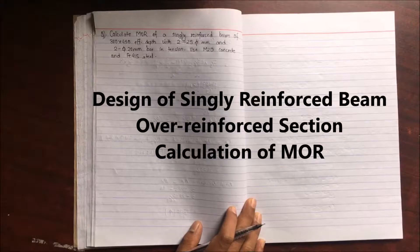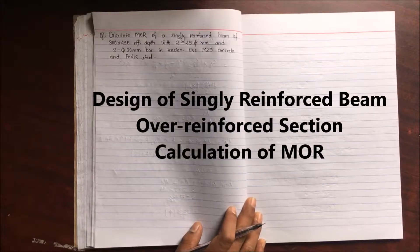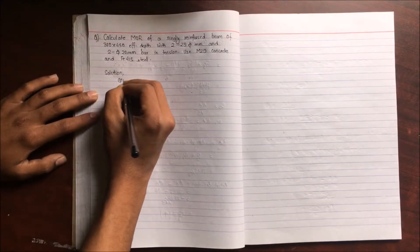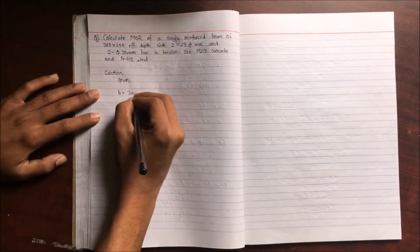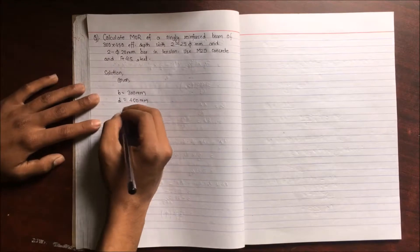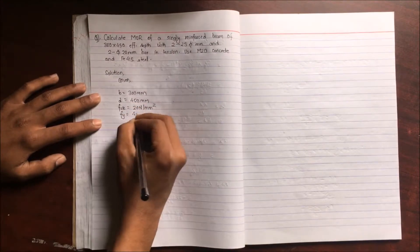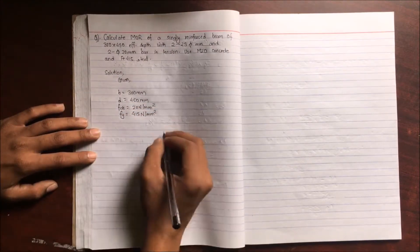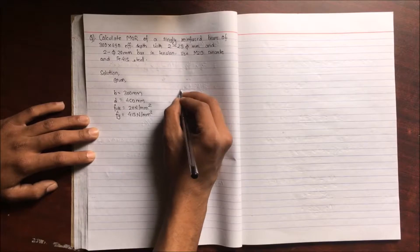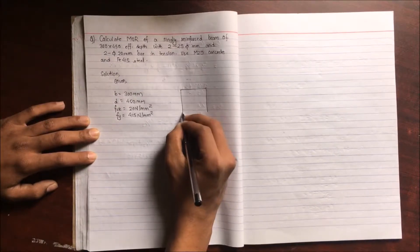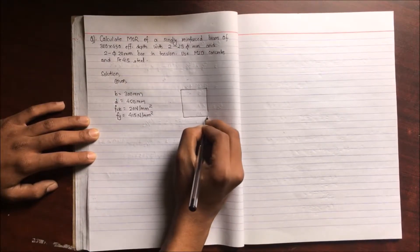Welcome to another video. In this video we'll discuss the calculation of the MOR for a singly reinforced beam. The given quantities are: b = 300 mm (width), effective depth d = 450 mm, characteristic strength fck = 20 N/mm², and yield strength of steel fy = 415 N/mm².